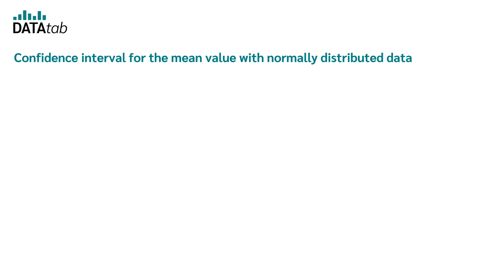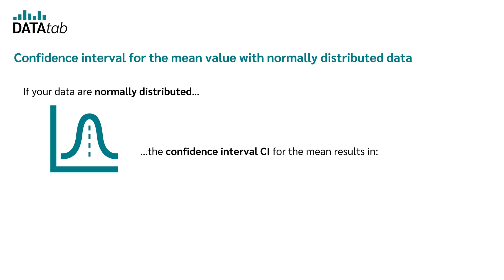Let's take a look at the confidence interval for the mean value of normally distributed data. If your data are normally distributed, the formula for the confidence interval for the mean results with x bar plus or minus z times s divided by the root of n. Here x bar is the mean, z is the z value for the respective confidence interval, n is the sample size and s is the standard deviation.